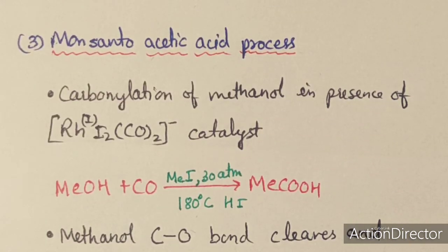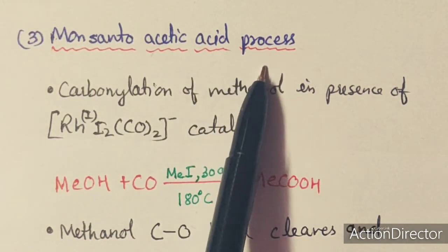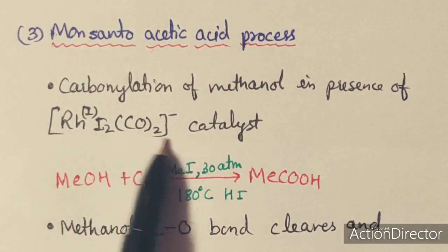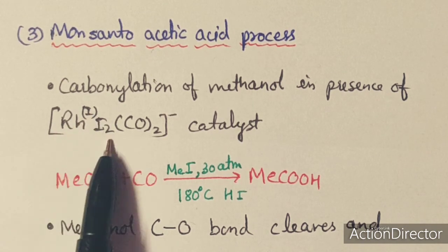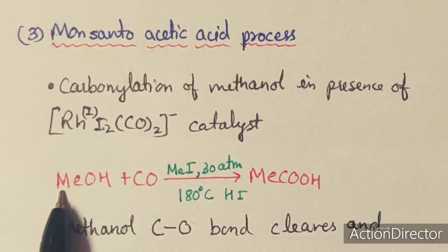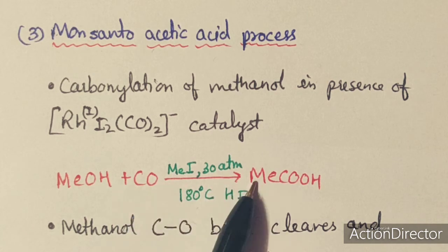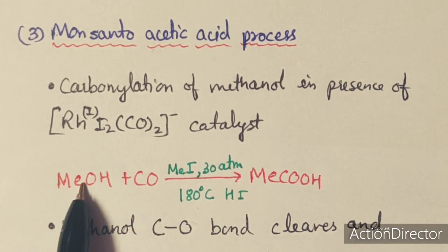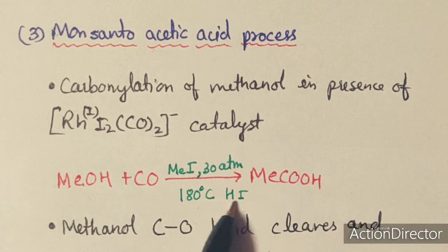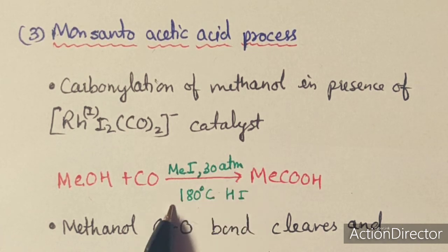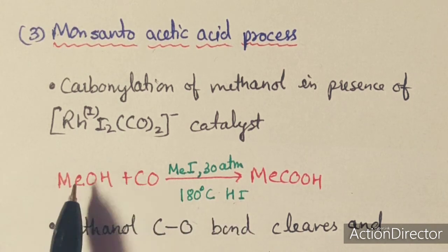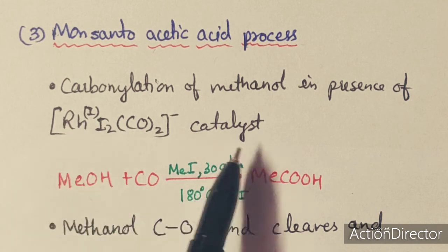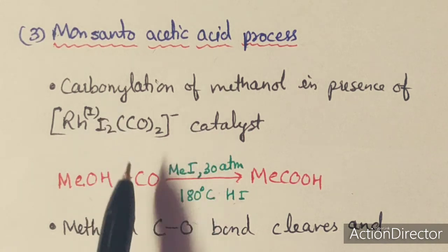The third process used to activate small molecules is the Monsanto acetic acid process — a simple carbonylation of methanol in the presence of a rhodium catalyst. Here the rhodium is in the +1 oxidation state: [RhI2(CO)2]⁻. In the presence of this catalyst, methanol reacts with CO to form acetic acid (CH3COOH). This reaction requires HI, 30 atm pressure, and 180°C temperature. The rhodium catalyst is necessary for activation of this CO bond.